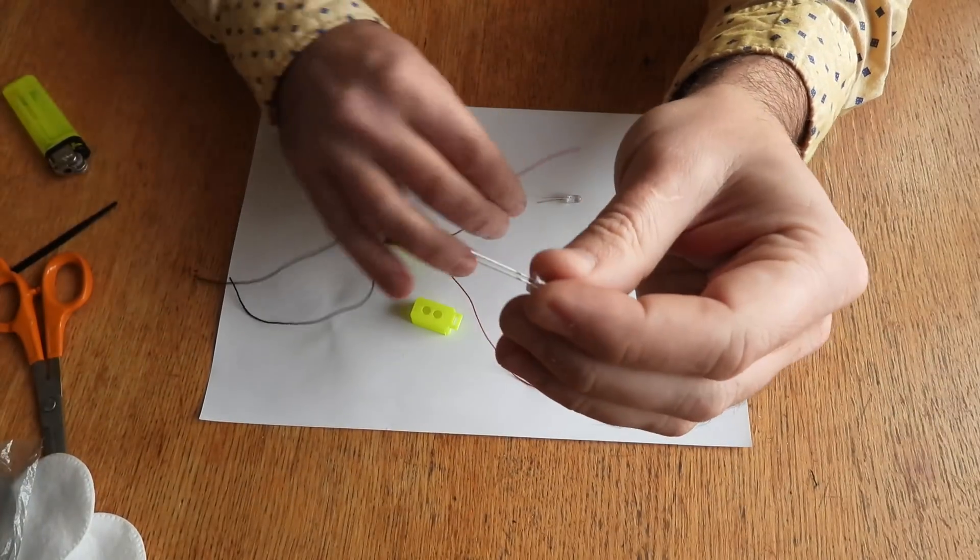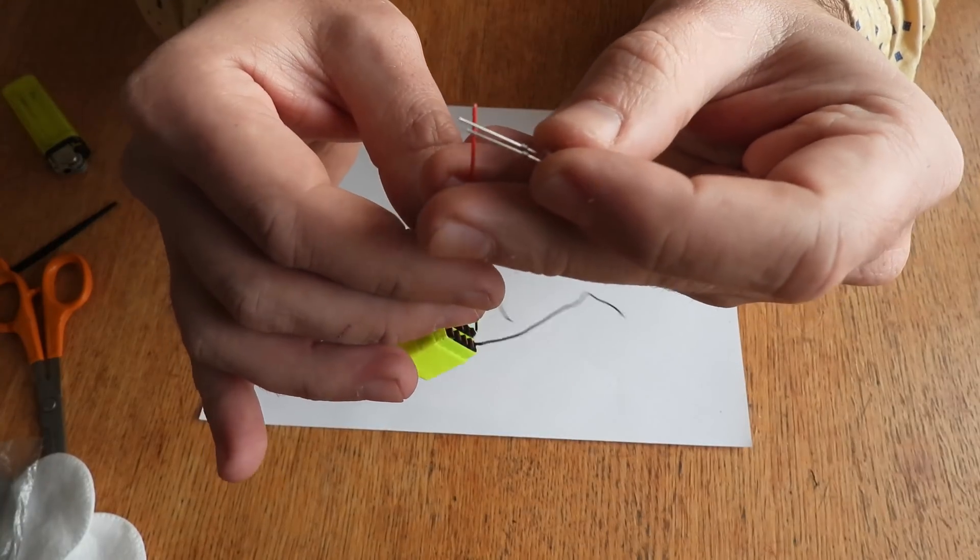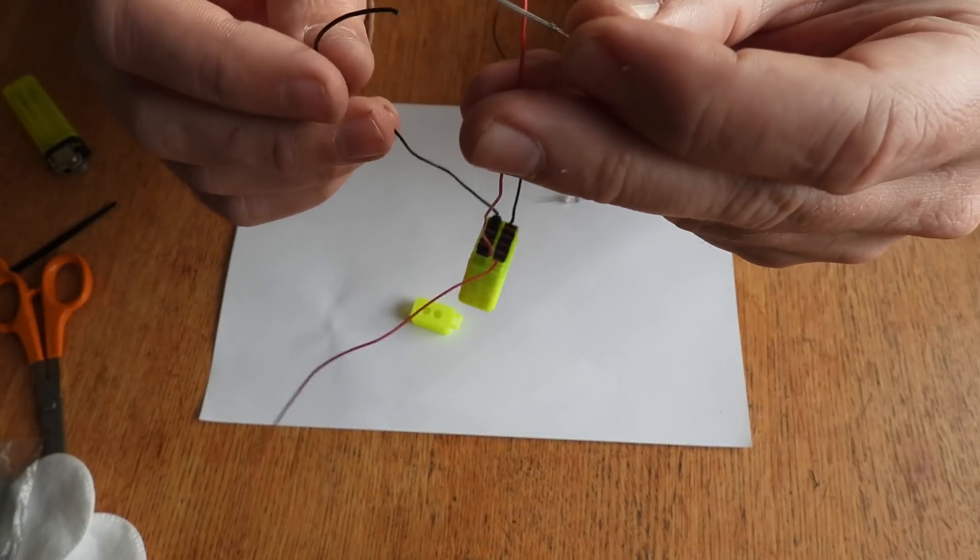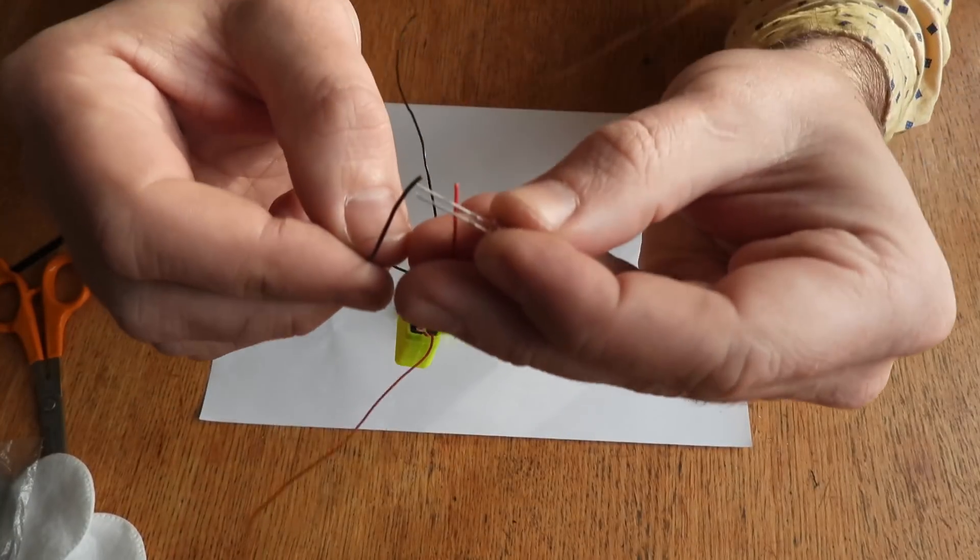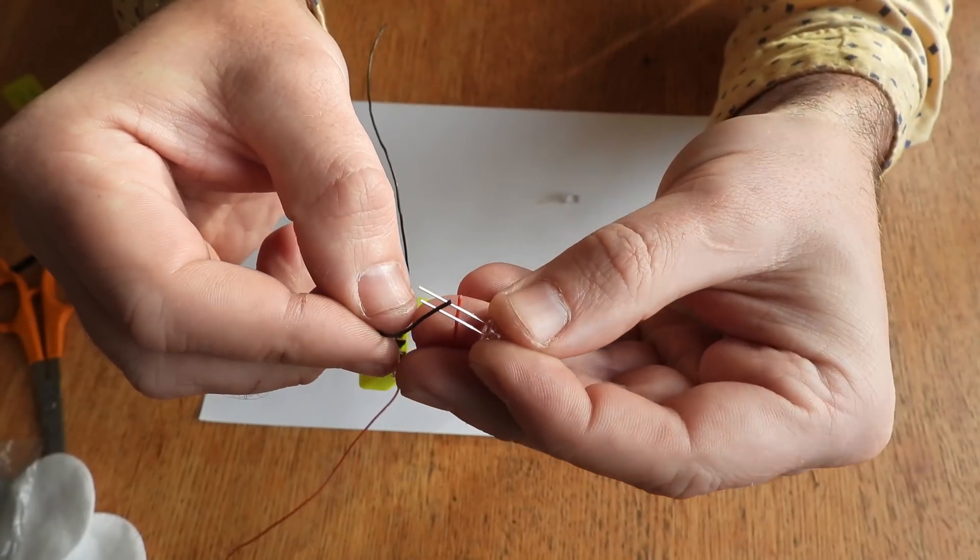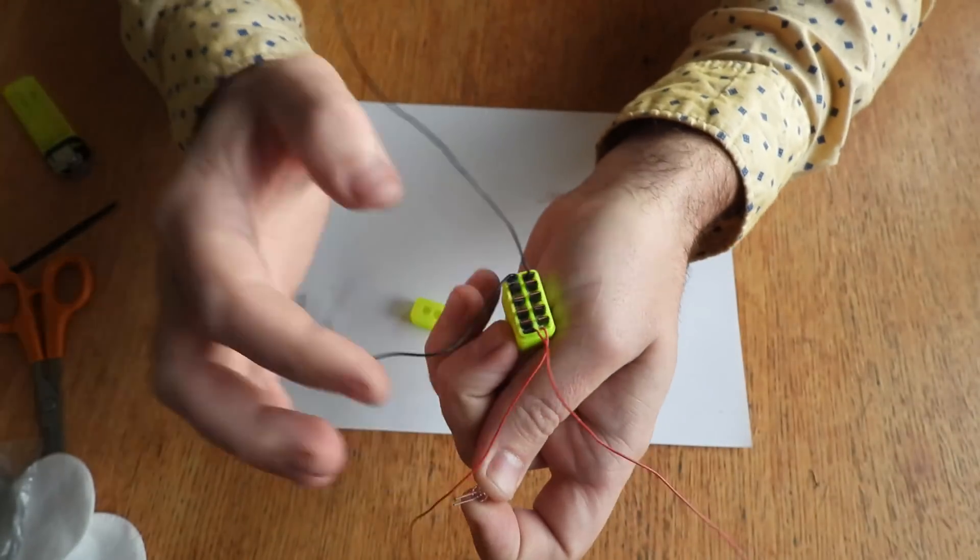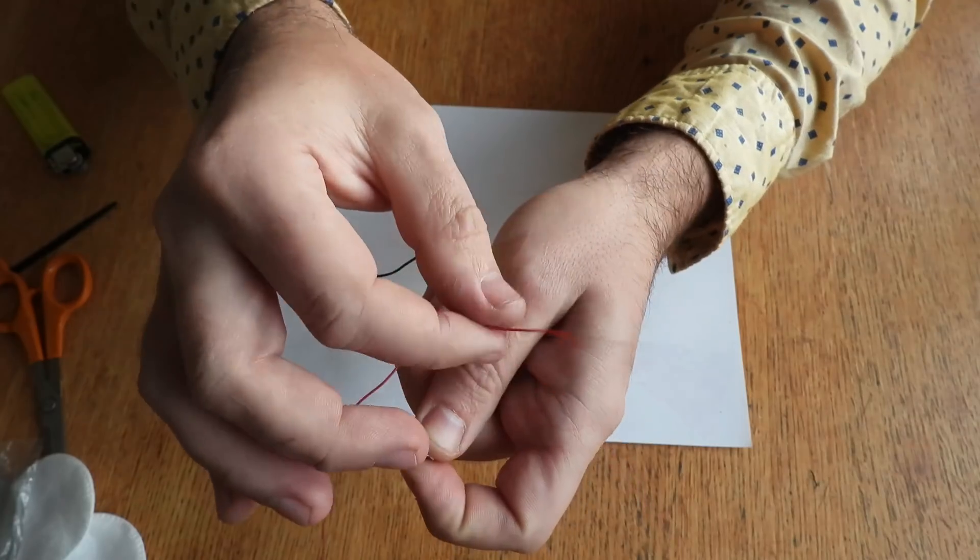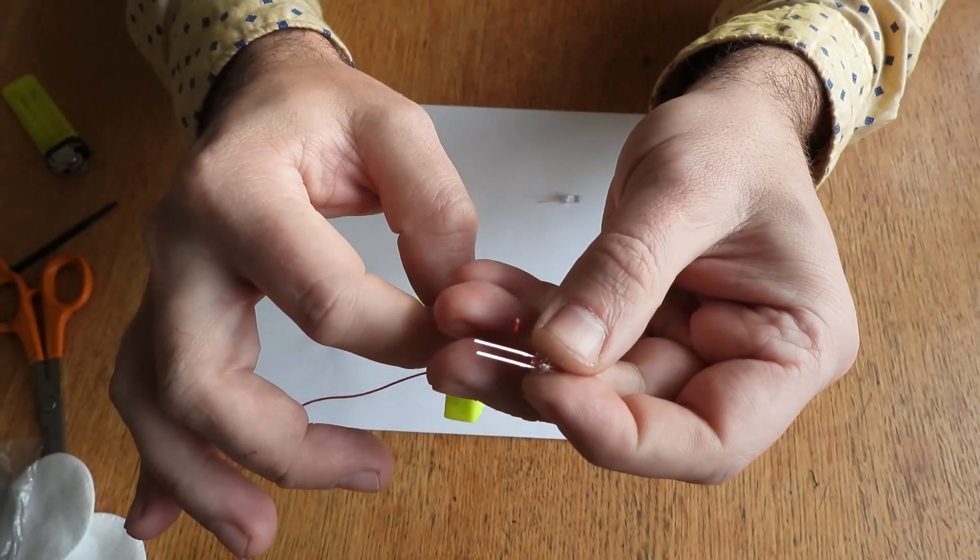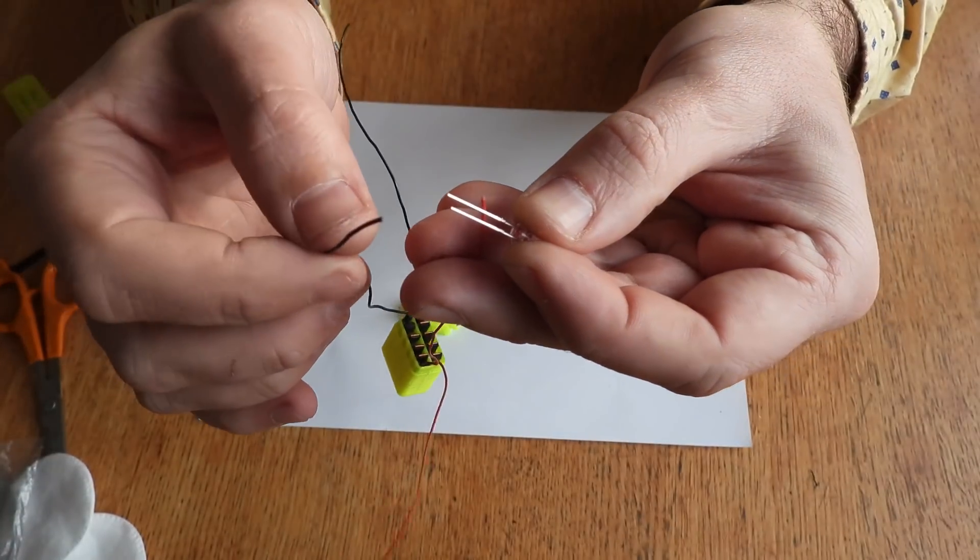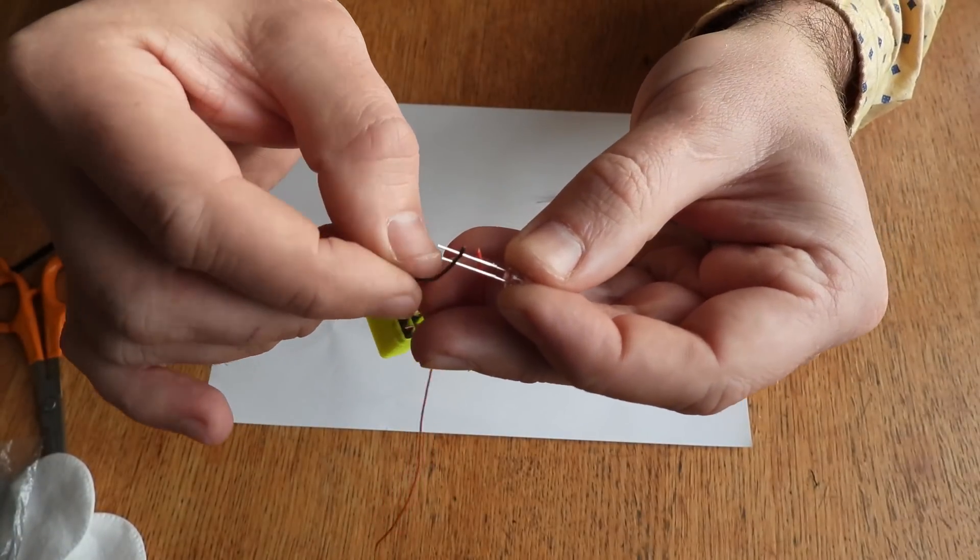Red cable we're going to attach here and black cable we're going to attach here. Of course one side, red cable is the plus attaching to the plus, black cable is the minus touching to the minus, like this.